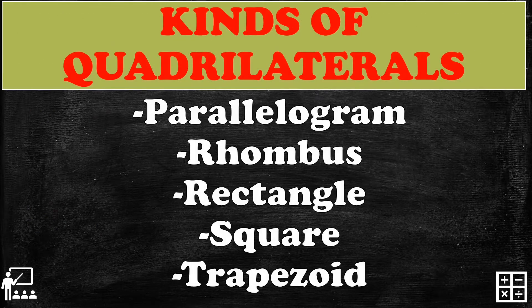There are kinds of quadrilaterals that I'm going to show you, and these are the parallelogram, rhombus, rectangle, square, and trapezoid. So let us look at each definition and the image of each quadrilateral.